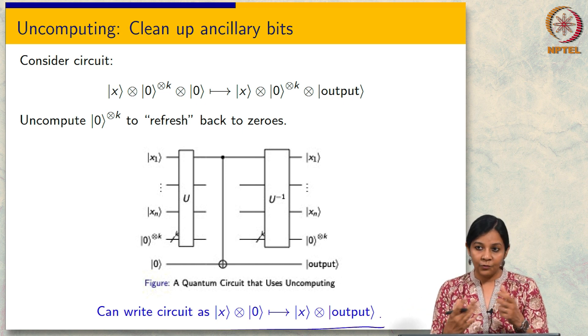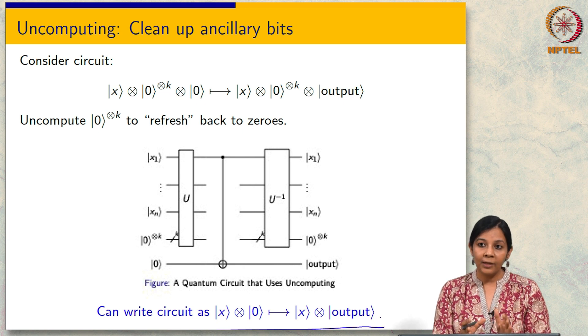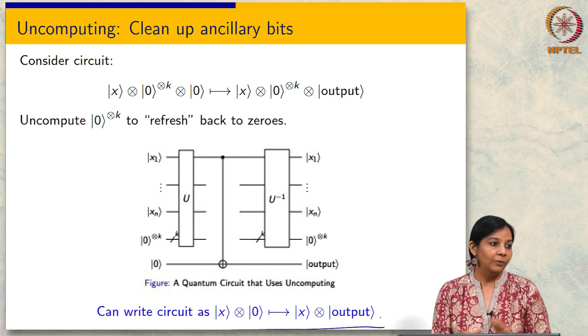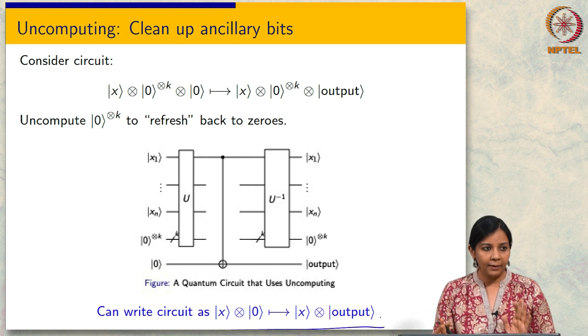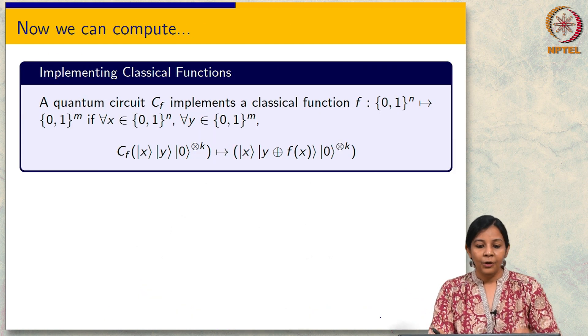In future classes we will construct circuits and so on, and we will have these ancillary bits, but we will keep ignoring them. It might create confusion as to why that is a legitimate thing to do. That is why I just wanted to briefly talk about this and now we will never think about this. We will just ignore ancillary bits from here on.